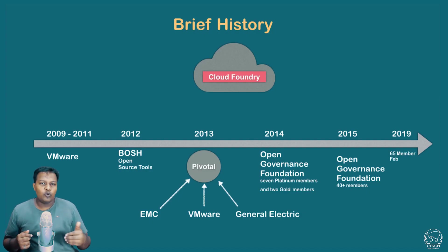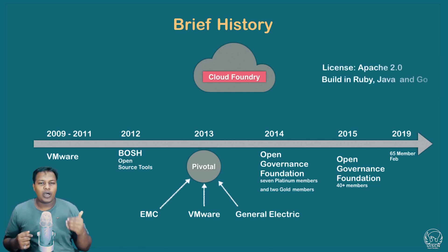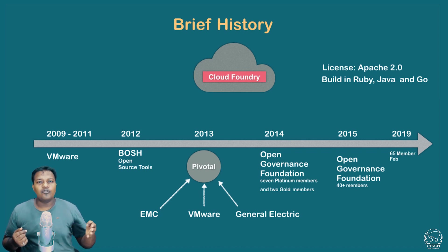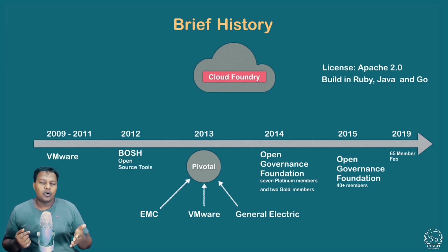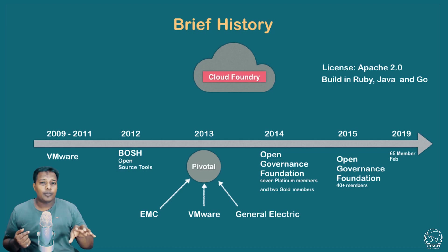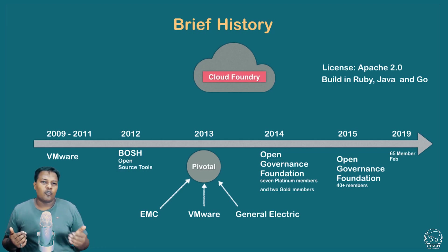Cloud Foundry comes with the Apache 2.0 license and is built with Ruby, Java, and Go. In older versions of Cloud Foundry, you will find a lot of Ruby programming, while in newer versions you will find a lot of Go programming.